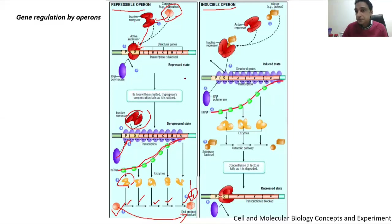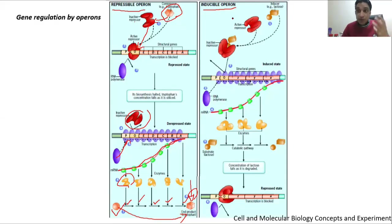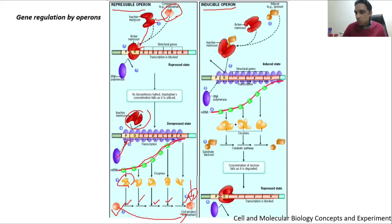This is an example of a repressible operon. The other type is the inducible operon. As the name indicates, the operon will work when something binds to it — something will push or induce the operon. In this example there are three genes, A, Y, and Z, which produce three enzymes used in a metabolic pathway.